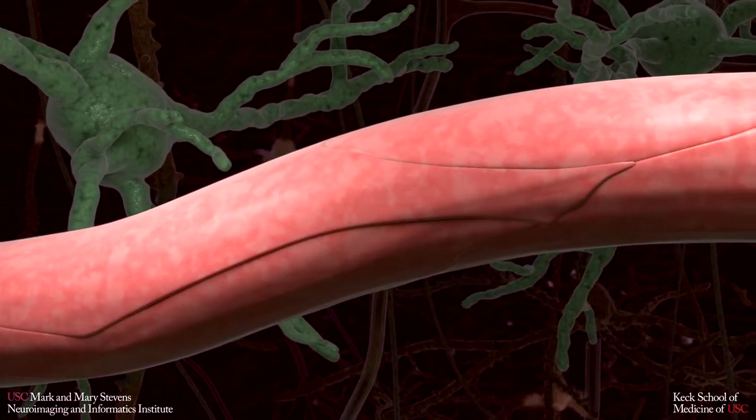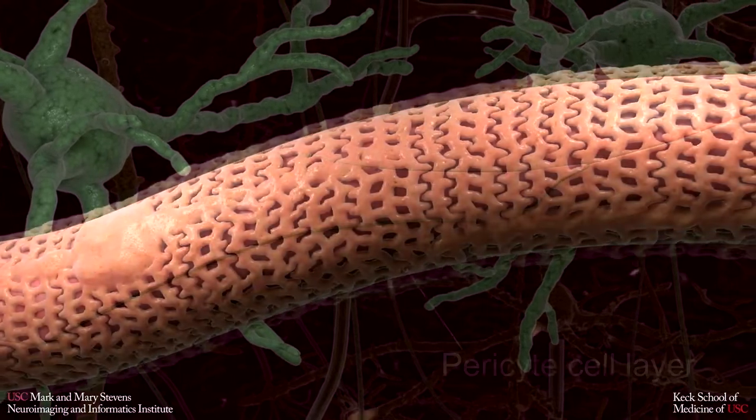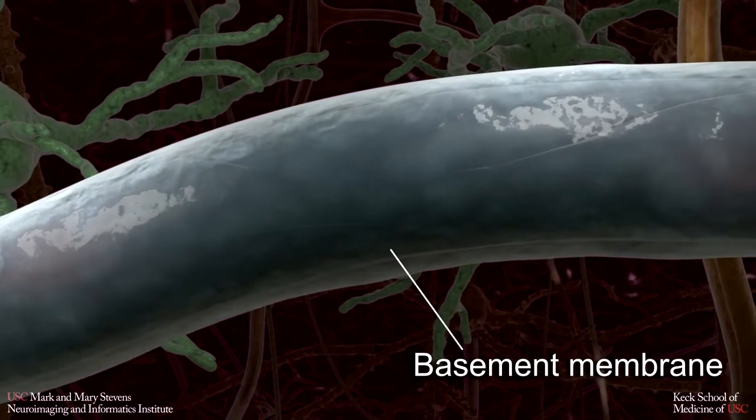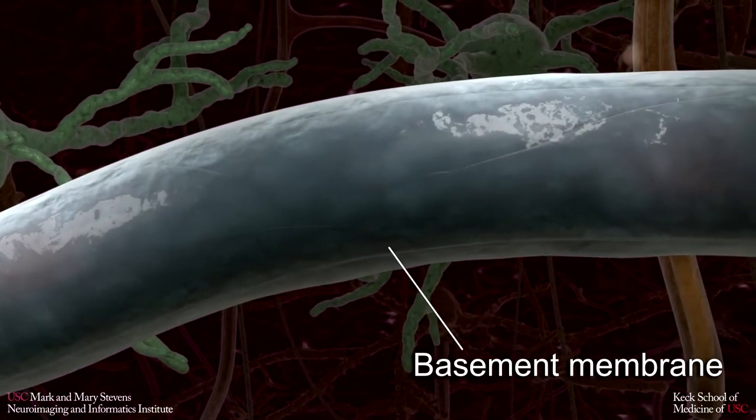The endothelial cells are wrapped in a layer of pericyte cells. Those are then embedded in a thick basement membrane made up of a fibrous extracellular matrix.